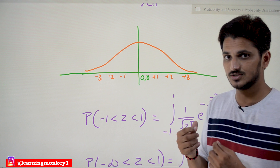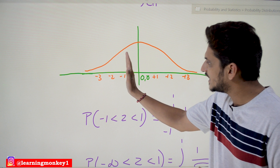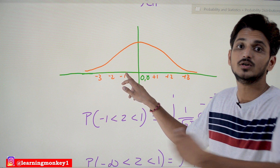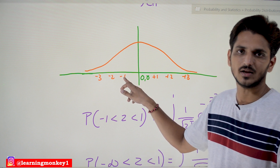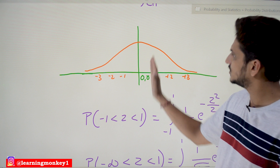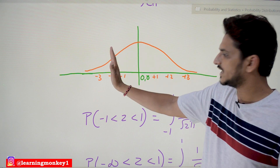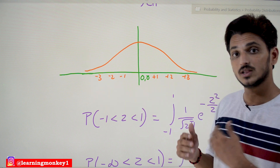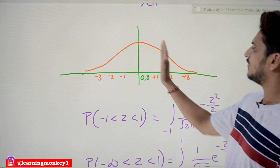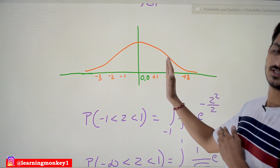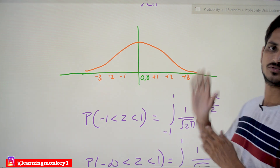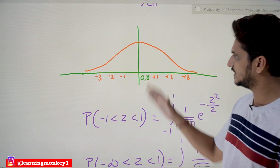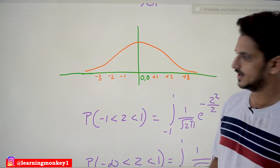Since σ² = 1, the standard deviation σ = 1. One standard deviation distance from the mean (0) to the left is −1, two standard deviations is −2, and three standard deviations is −3. Similarly, to the right side, one standard deviation is +1, two is +2, and three is +3. This is how the standard normal distribution looks graphically.